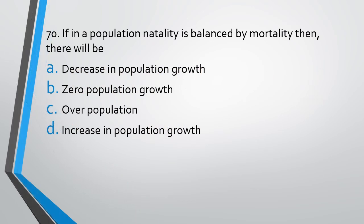Question number 70. In a population, natality is balanced by mortality. Then there will be: increase in population growth, zero population growth, or overpopulation. The correct answer is option B — there won't be any population growth because mortality is being balanced by natality.